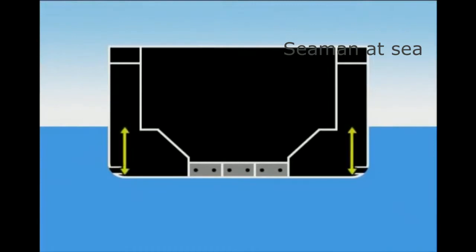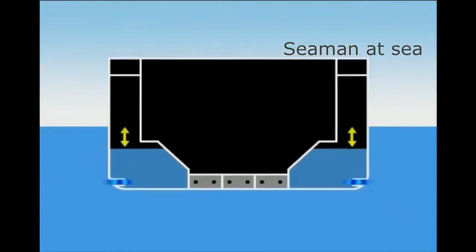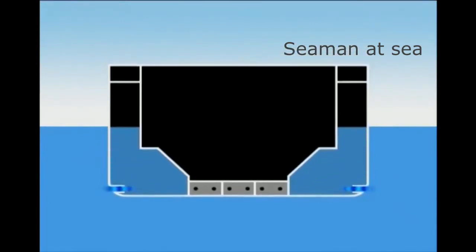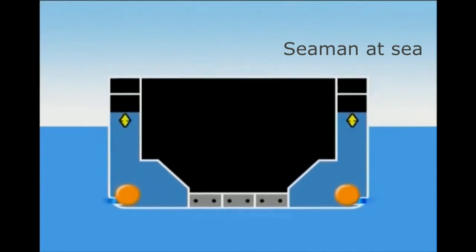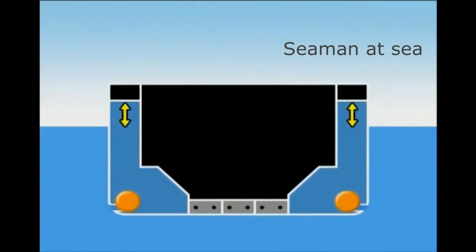As cargo is unloaded and the water level inside the ballast tank becomes lower than the sea surface, ballast water is gravity-filled into the tank thanks to the water pressure head of the seawater. Ballast filling stops when the water pressure head becomes zero as the ballast water level rises to equal the sea surface. To continue to fill ballast water further from this state of balance, it's necessary to pump water in with a water pressure head higher than that inside the tank.